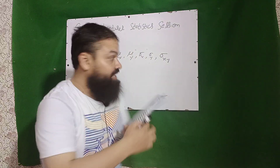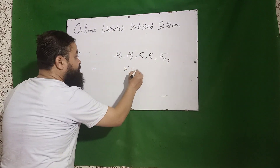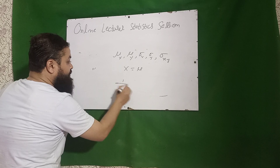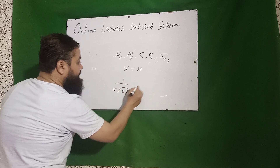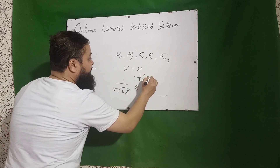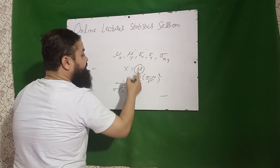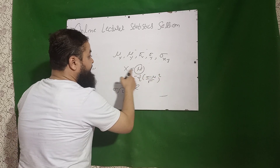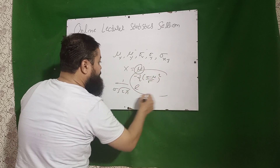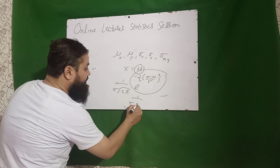Next question: the maximum ordinate of the normal distribution is at x equal to mu. Substituting into the formula — one over sigma root 2π times e to the power of minus one-half times ((x minus mu) over sigma) squared — when x equals mu, that exponential term equals 1, and the answer is 1 over (sigma root 2π).